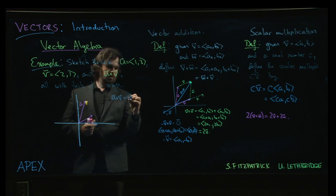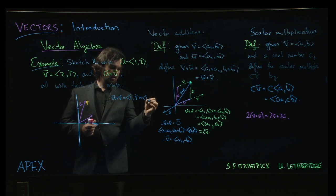All right, so it's going to be 1, 3, added to 2, 1. So that is 1 plus 2, 3 plus 1.